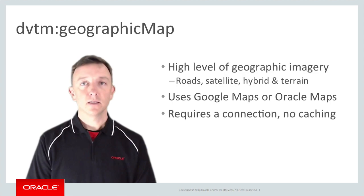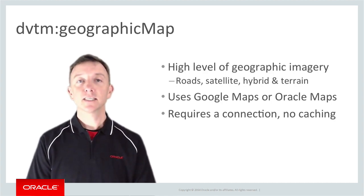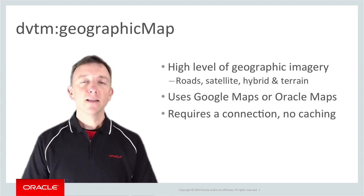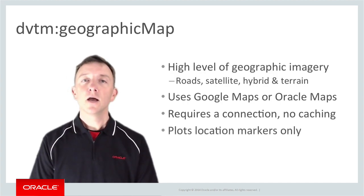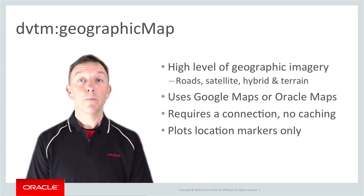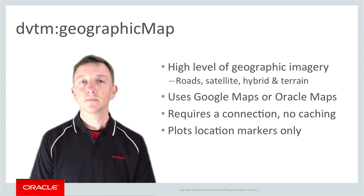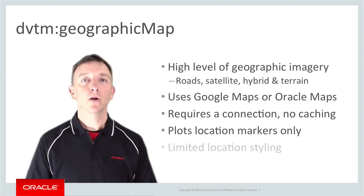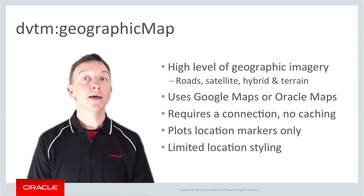There is no map caching facility, though arguably those are a specialized type of mobile application that you would purchase separately and could access by using a URL scheme to call and open them from your map application. Just like other DVT components like charts, the geographic map component is capable of plotting locations with stylized markers, so you can easily highlight distinct locations on the map. When we look at the thematic map component, it has further capabilities to map areas rather than just single point locations. It's worth noting that the geographic map component has limited ability to stylize the map and location markers, though we'll investigate that further in a moment.